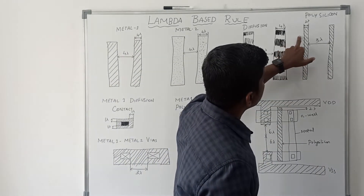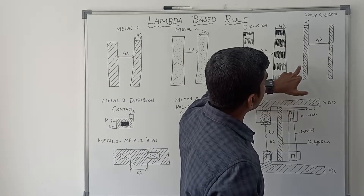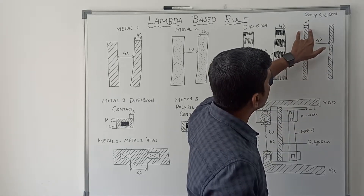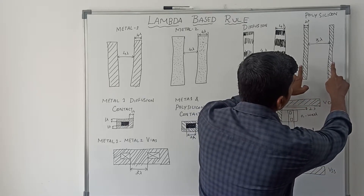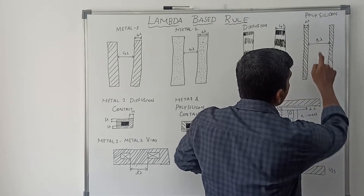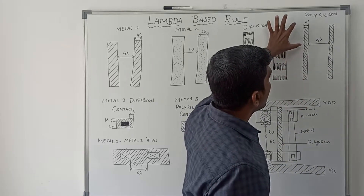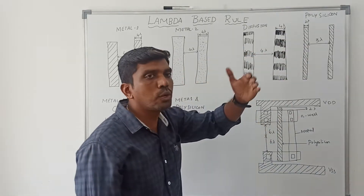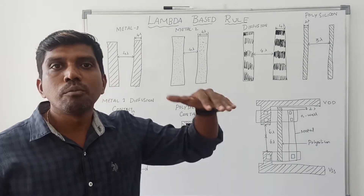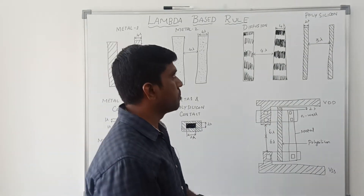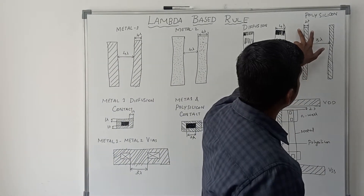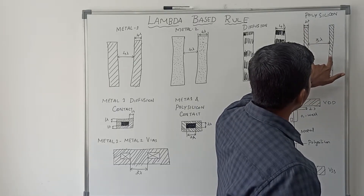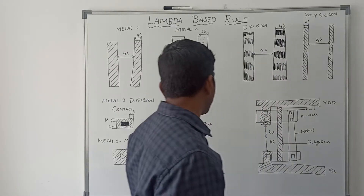Polysilicon is represented by a rectangular box with a backslash symbol inside. The minimum width of polysilicon is 2 lambda, and the minimum spacing between two polysilicon lines is 3 lambda. All these parameter values are minimum values — below that value is not acceptable, more than that value is acceptable.